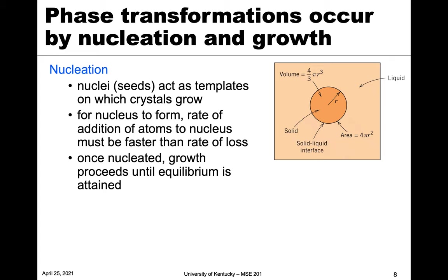This phase transformation is governed by two separate phenomena: the first is nucleation, and the second is growth, which we'll talk about in a bit. Nucleation is basically the start — a nucleus is like a seed crystal, a template from which the crystal will continue to grow. For a nucleus to form, the rate of addition of atoms to the nucleus must be faster than the loss. Once it's nucleated, growth can proceed until some equilibrium is reached.